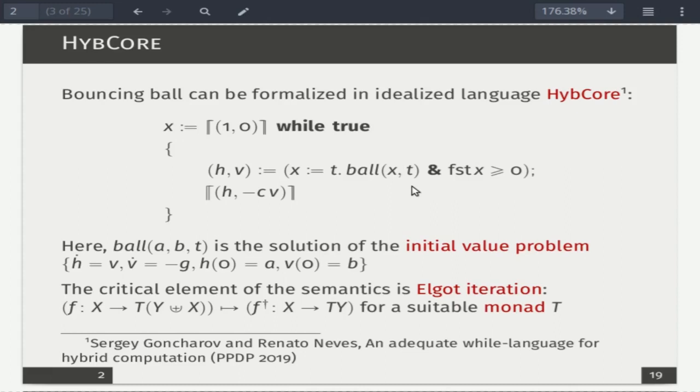The standard approach to define semantics of such things would be to involve computational monads as proposed by Moggi. And since we are also interested in while loops, we need an additional structure on monads, and that's a notion of Elgot iteration, at least a suitable abstraction which would provide semantics for while loops would be Elgot iteration. So it's an operator which sends maps like this to maps like this. So basically we iterate over this type so that in the result it completely vanishes.